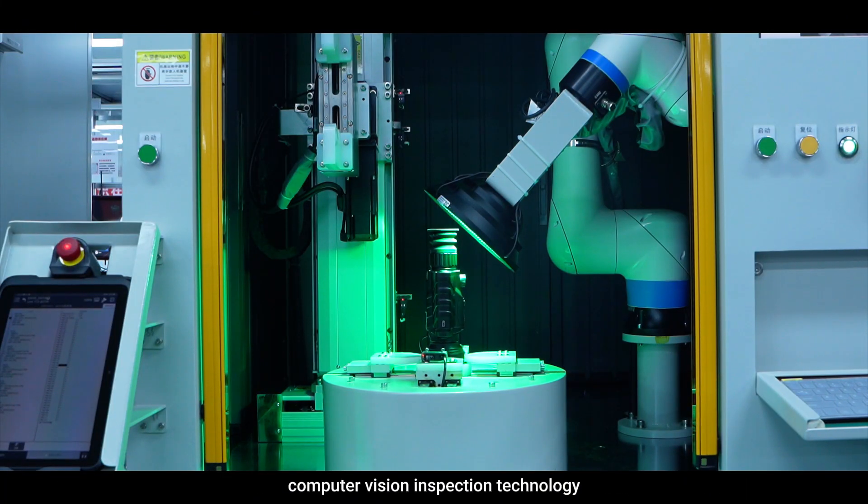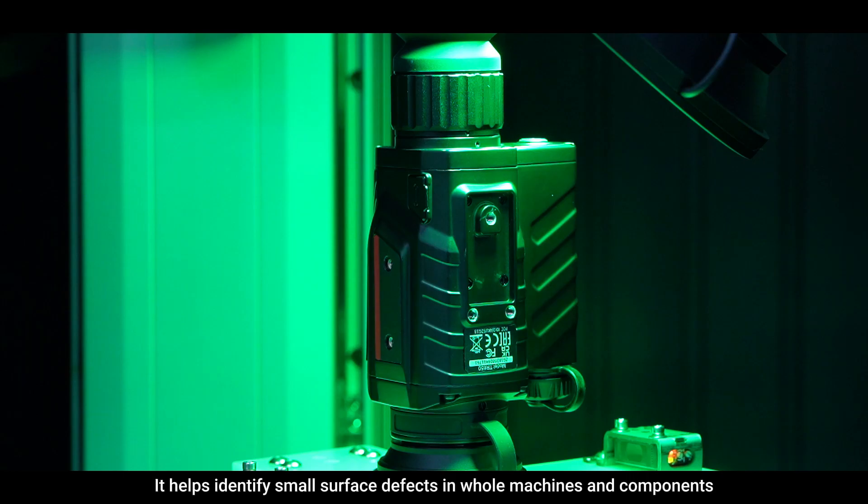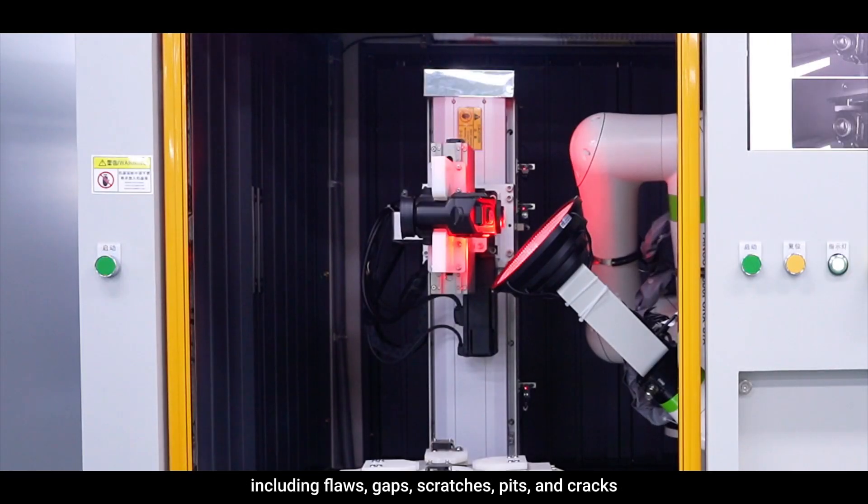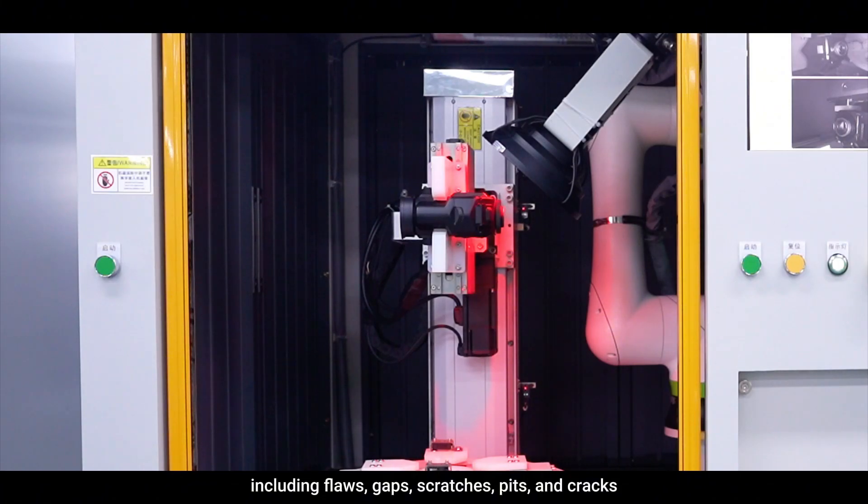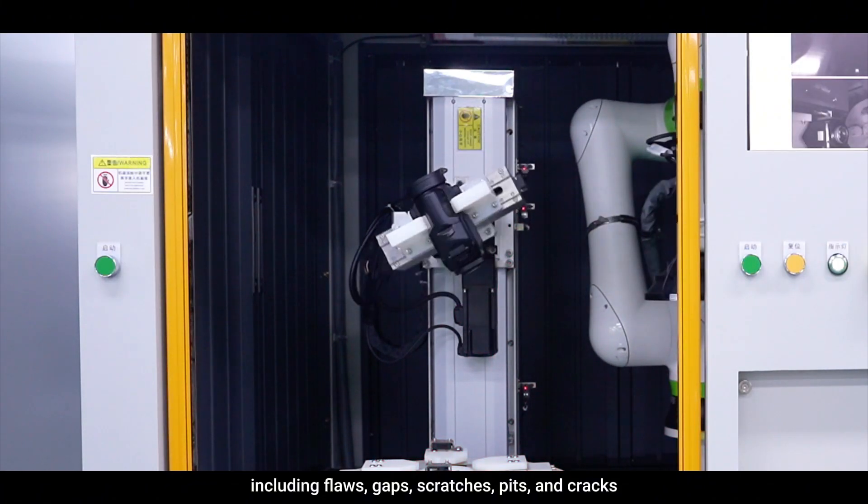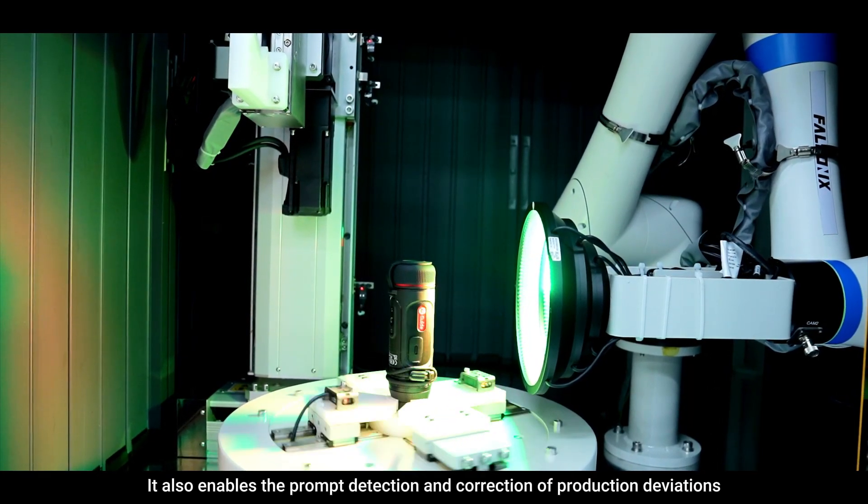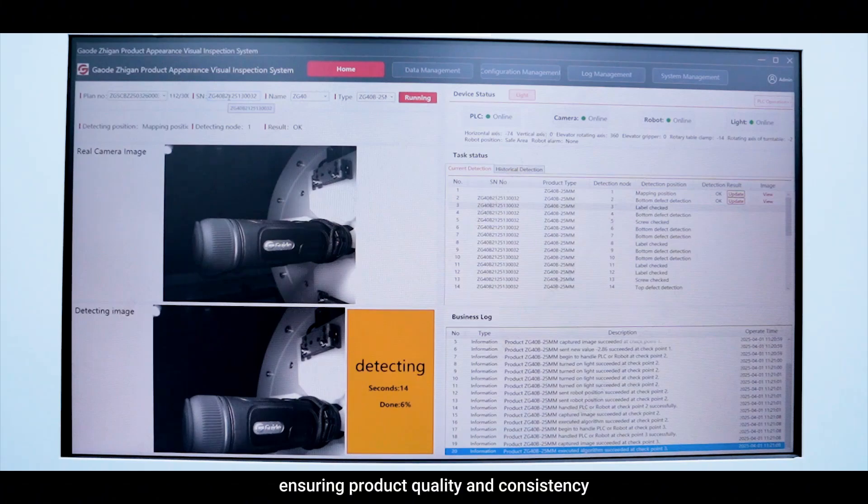Computer Vision Inspection Technology helps identify small surface defects in whole machines and components, including flaws, gaps, scratches, pits, and cracks. It also enables the prompt detection and correction of production deviations, ensuring product quality and consistency.